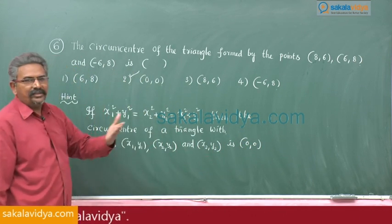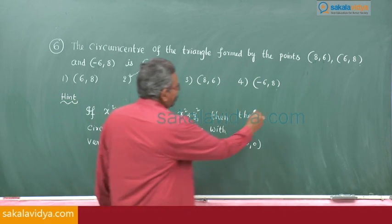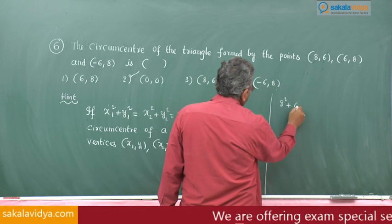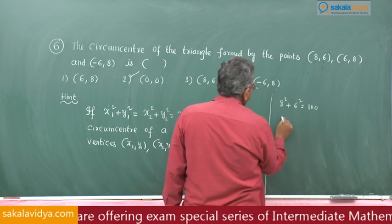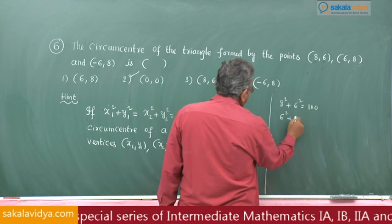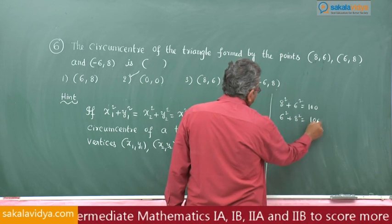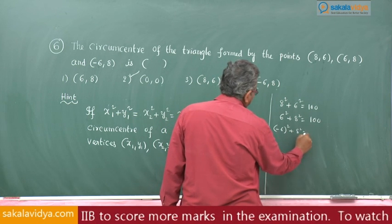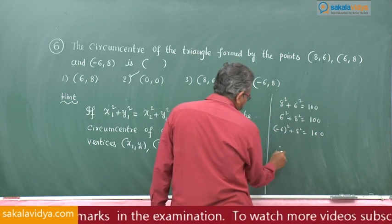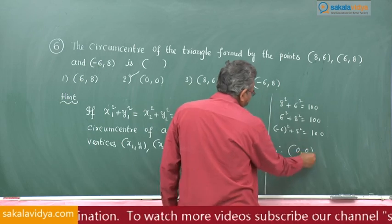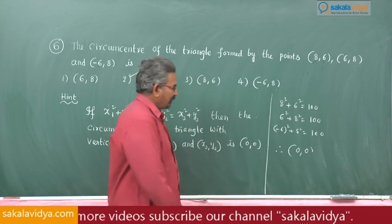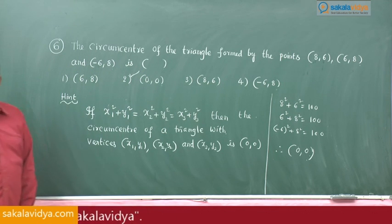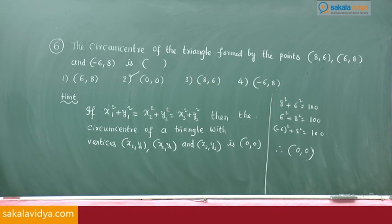So, here you check it just 8² + 6², 100, 6² + 8², 100, minus 6² + 8², 100. So, therefore, origin is the circumcentre. That is all, very simple circumcentre.